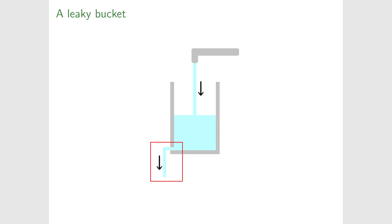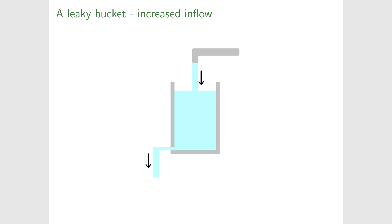The speed the water flows out the bottom depends on the pressure of the water at the bottom, which depends on the height of the water. If we increase the flow of water into the bucket, there'll be more water flowing in than out, so the height will rise until the pressure at the bottom is enough for the outflow to balance the inflow. Conversely, if we turn down the tap, the water level will drop until the outflow balances the inflow. That's the dynamics we want to capture.